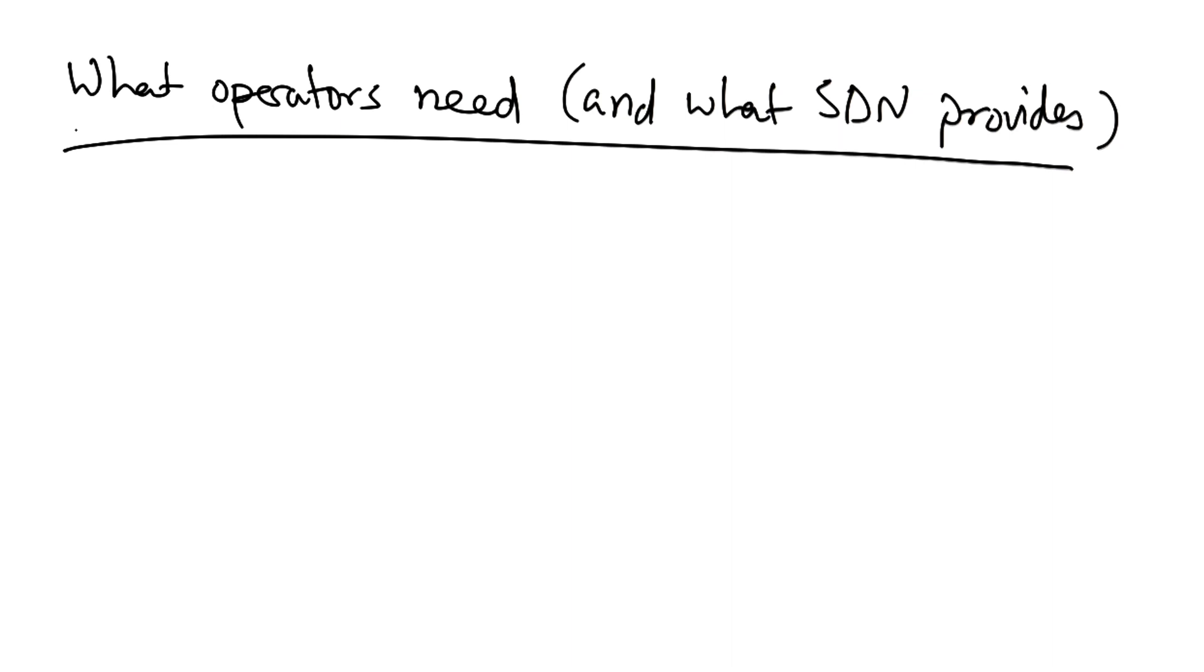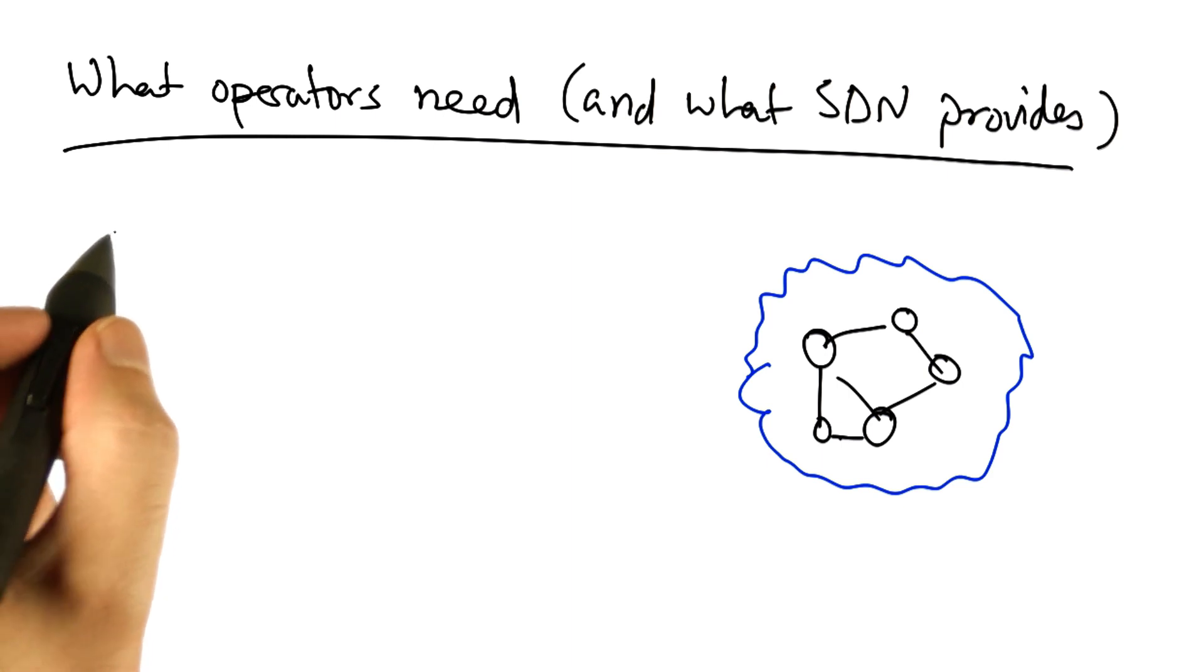At a very high level, software defined networking provides exactly the primitives that operators need to run the network better. In particular, SDN provides operators three things.